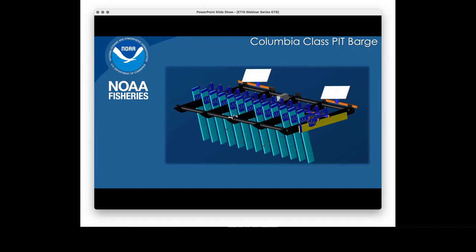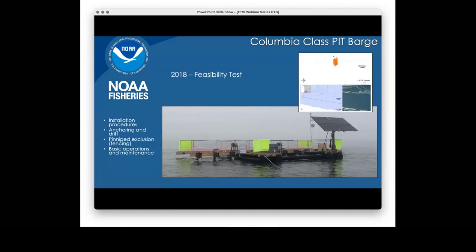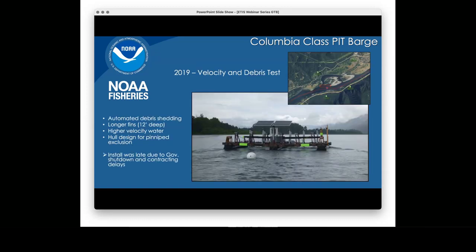Next I'm going to talk about the Columbia Class PIT barge that we've been using in the lower Columbia for the last three years. We started in 2018 — West Fork Environmental leased a barge to us, and that year we wanted to see how difficult it would be to install, what it would take to anchor the system, how well it would stay on anchor, whether we could keep pinnipeds off of it, and get an idea of basic operations and maintenance. Once installed, the barge stayed on station and didn't move very much, which would allow us to put it pretty close to the shipping channel. The antennas on this barge were only six feet deep.